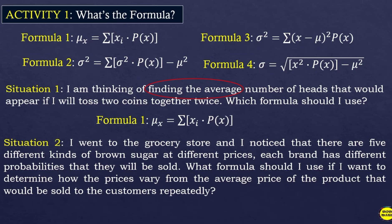In situation number two: I went to the grocery store and noticed that there are five different kinds of brown sugar at different prices. Each brand has different probabilities that they will be sold. What formula should I use if I want to determine how the prices vary from the average price of the product that would be sold to the customer repeatedly?